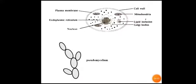This is the arrangement of yeast cells. Yeast cells are unicellular; however, they remain attached to each other and appear as mycelium. But it is not true mycelium — that is why it is called pseudo-mycelium.